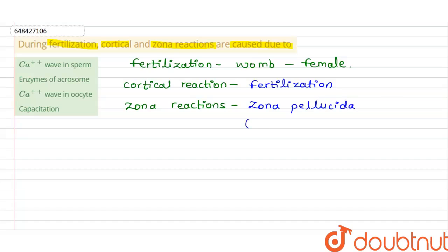Where the polyspermy can also occur, polyspermy condition can also occur. So here now we understand, here also we will write the cortical granules. So this is the cortical reaction and zona reaction will take place.